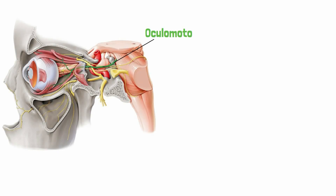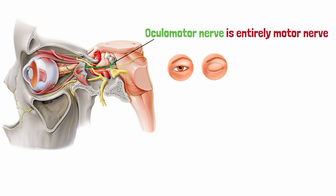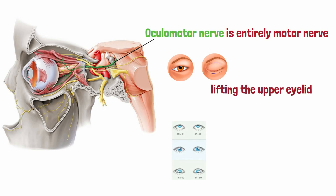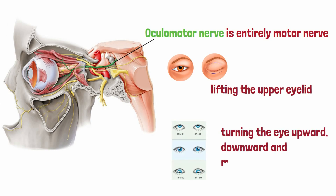Therefore, the oculomotor nerve is entirely a motor nerve providing motor supply to the external muscles of the eye. Through the actions of these muscles, it is responsible for various actions of the eyes such as lifting the upper eyelid, turning the eye upward, downward, and medially.